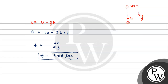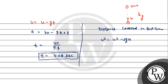Now we find the distance covered — the maximum height. Using v squared equals u squared minus 2gh, with v equal to 0: 0 equals 40 squared minus 2 into 9.8 into h. So 1600 equals 19.6h, giving h equals 81.632 meters.